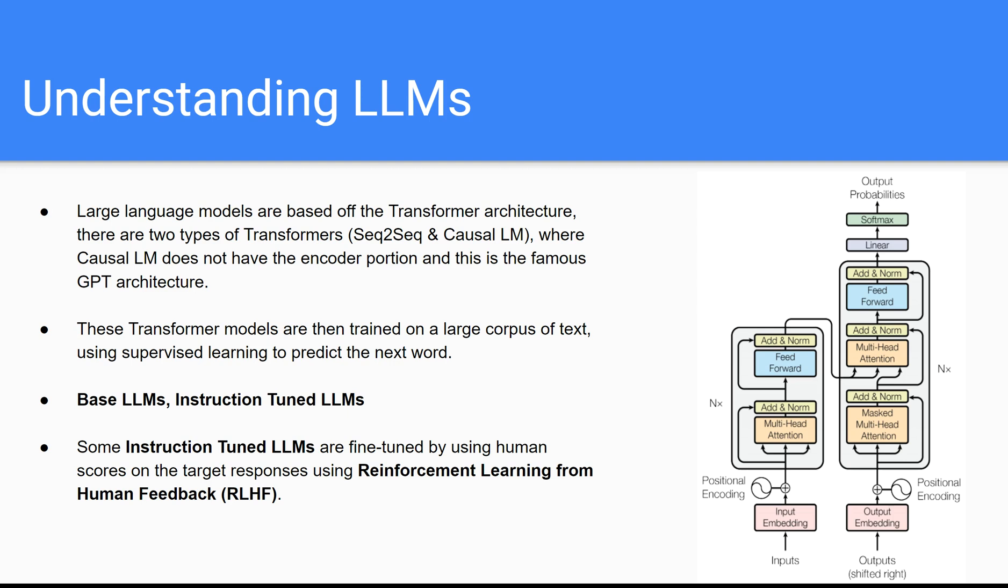But essentially, what you do first is you take your large language model and you train what's called a base LLM. And this base LLM is trained on a large corpus of text, and you're only training this model to predict the next best token in that text. And so this model, whenever it's done training and it's doing very well at predicting the next token, it's really only good for auto-completion.